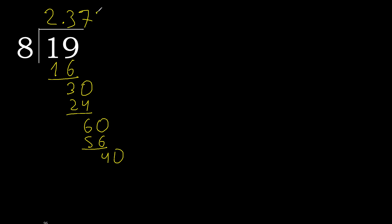8 multiplied by 5 is 40. Subtract: 0 remainder 0. Therefore finish. 19 divided by 8 is complete here.